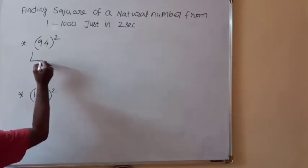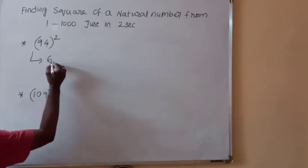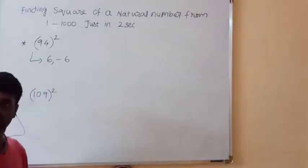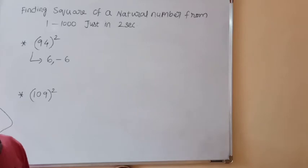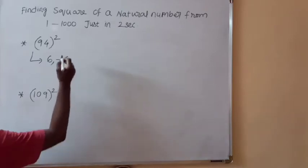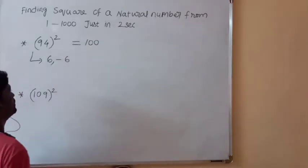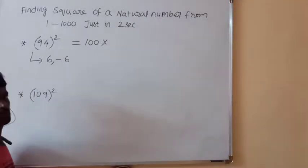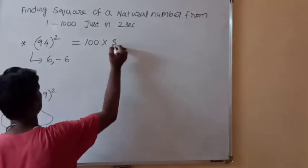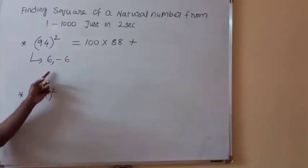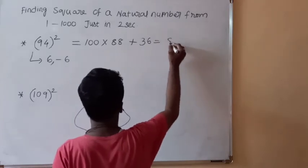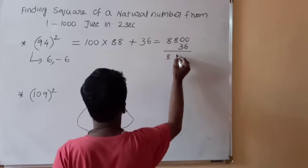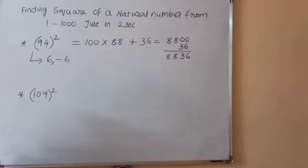For 94 square, add and subtract 6 because 94 plus 6 is 100, where unit and tens digits are both 0. So 94² = 100 × 88 + 6² = 8800 + 36 = 8836. Thus 94 square is 8836.